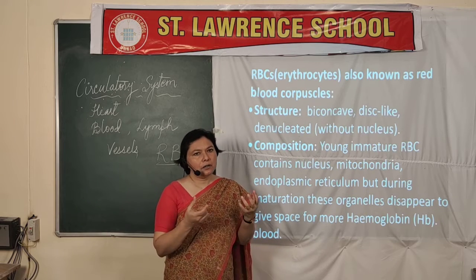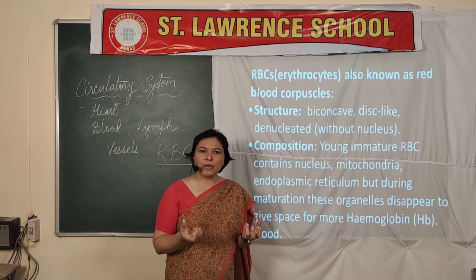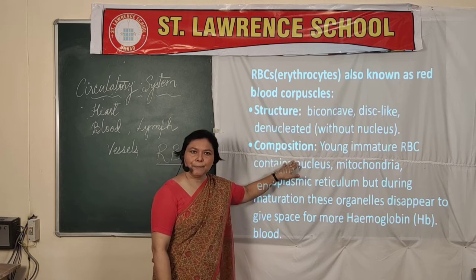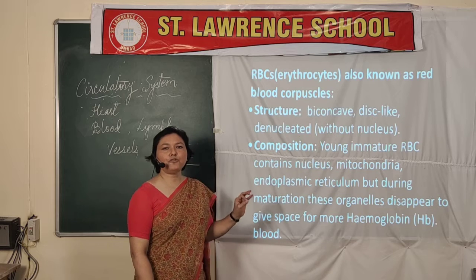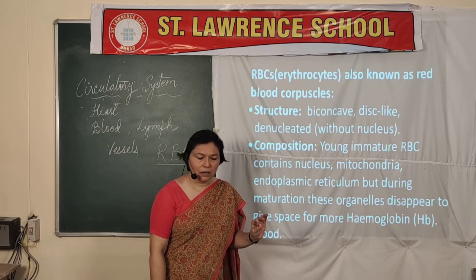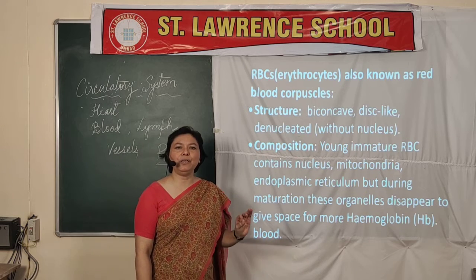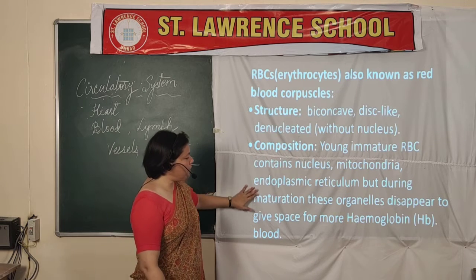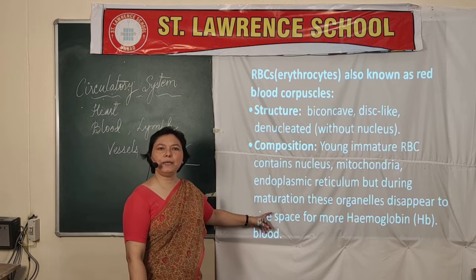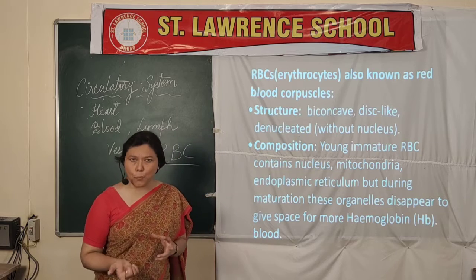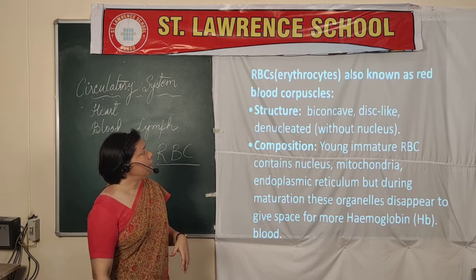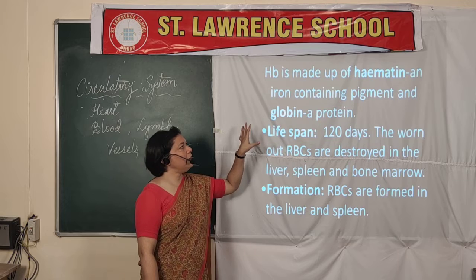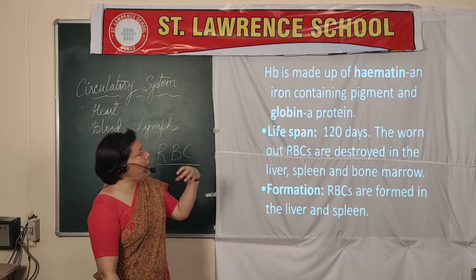Nucleus is present only when RBCs are formed. At the time of their immaturity they have a nucleus, but as the RBCs mature, the nucleus disappears. The reason is that they need to accommodate more and more hemoglobin pigment so that more oxygen can be bound and transported to various parts of the body. Hemoglobin is a red color pigment and it is made up of two components: hematin and globin.